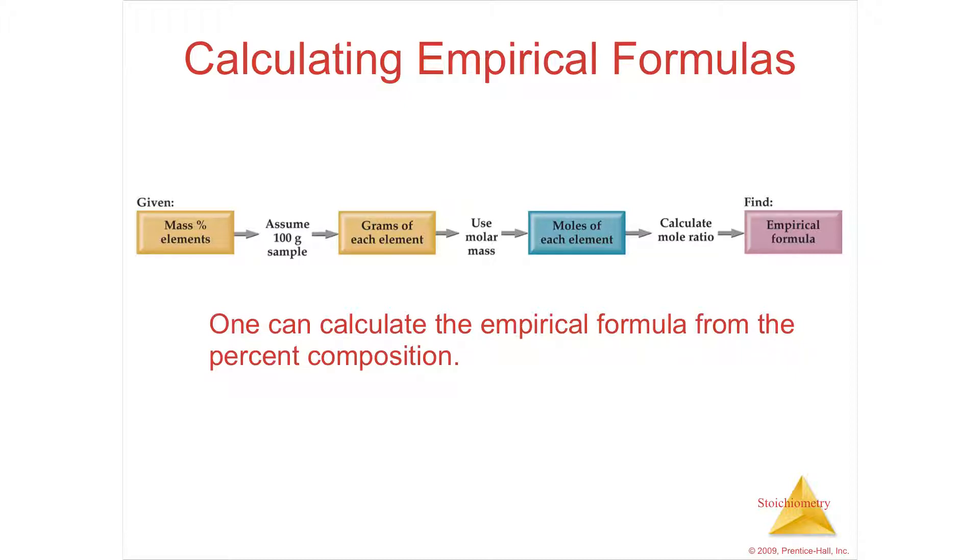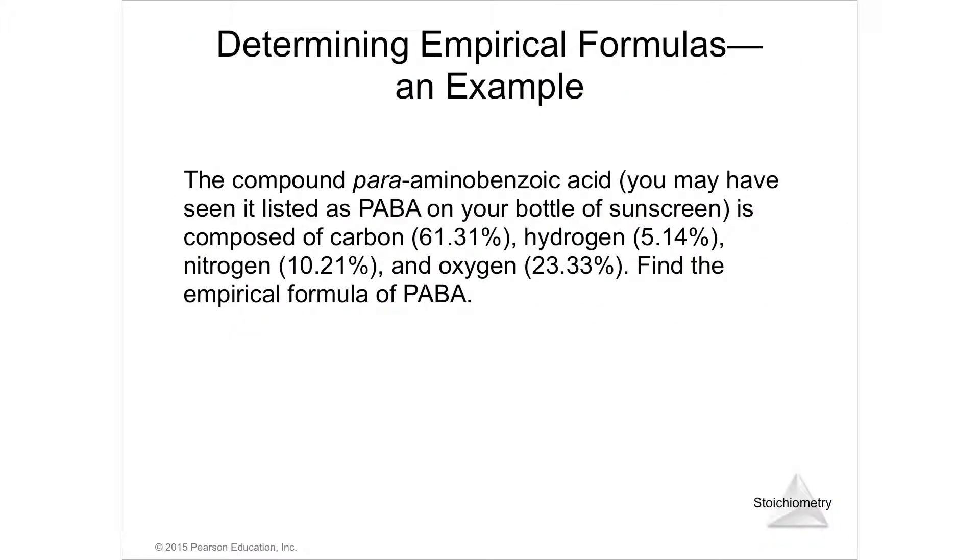It means divide by the molar mass. So remember, water was 18 grams per mole. If I have a certain number of grams of water, divide by 18 grams, and now I'm in moles. Once I'm in moles, I can figure out the empirical formula. Moles are numbers. If I know the number of moles, then I know the formula.